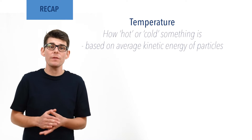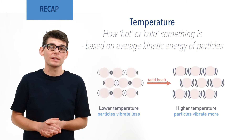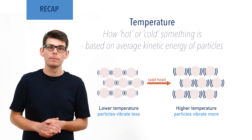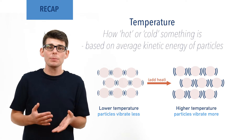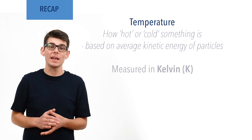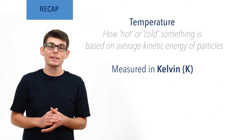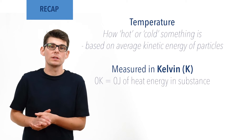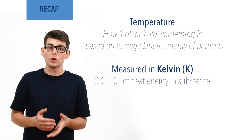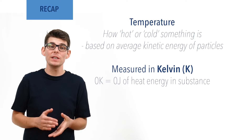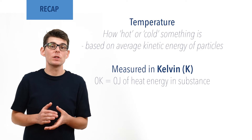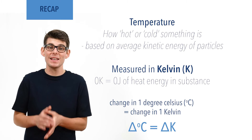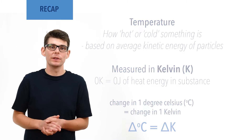The higher the temperature, the hotter the object, and the more the particles in it are vibrating and moving. Temperature in chemistry is often measured in Kelvin, as this scale directly links the value of temperature to the energy content of a substance. Temperature changes can more easily and conveniently be measured in degrees Celsius, as a change in one degree Celsius is the same as a change in one Kelvin.